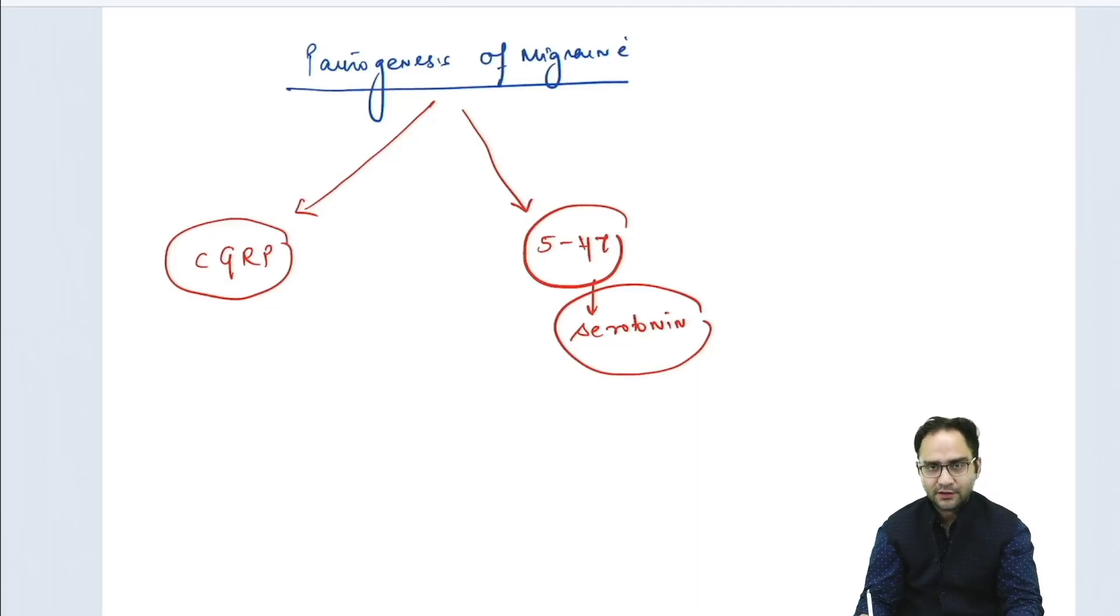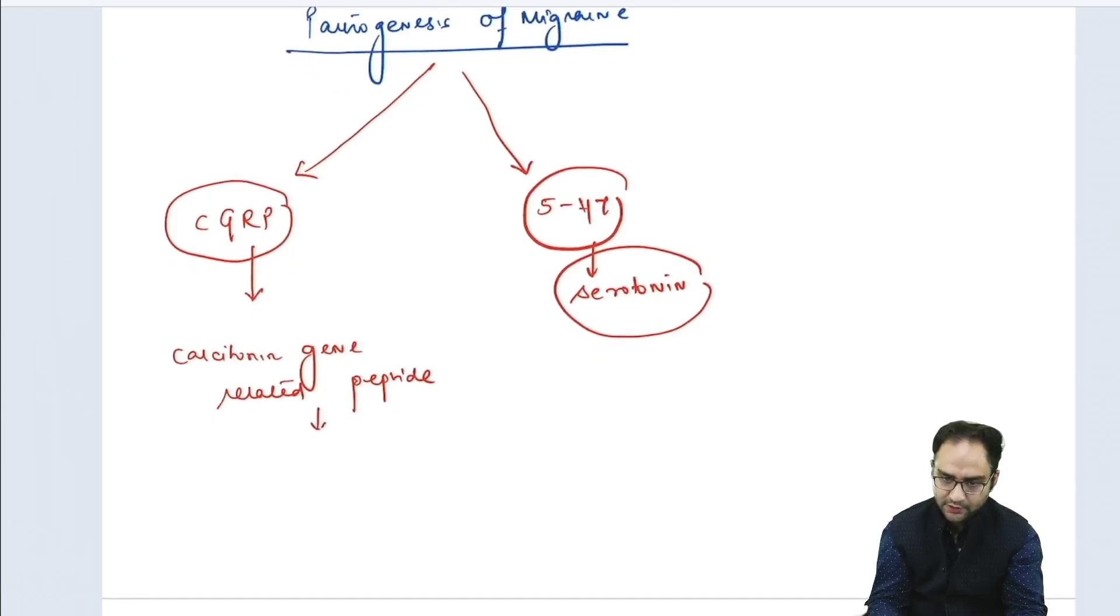We have drugs that act through the serotonin pathway and control migraine. But today's topic is CGRP. What actually does CGRP do? Because it is calcitonin gene related peptide, they act on the trigeminal nerve endings and cause migraine.